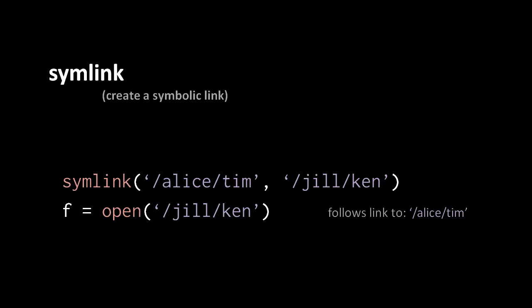To create a symbolic link, we have the system call symlink, to which we supply the path to the file or directory to which we wish to link, and then the path of the symbolic link we wish to create. For example, this creates a symbolic link /jill/ken which points to the file or directory /alice/tim. If we then open that symbolic link, what actually gets opened is the file to which it points, not the symbolic link itself. Symbolic links are very much like shortcut files in Windows.